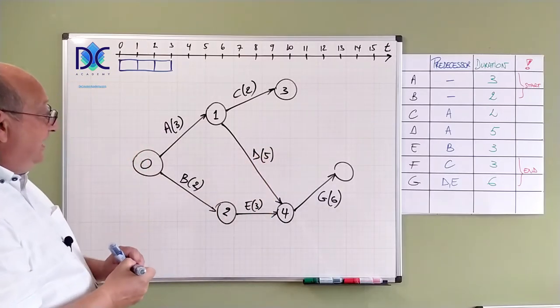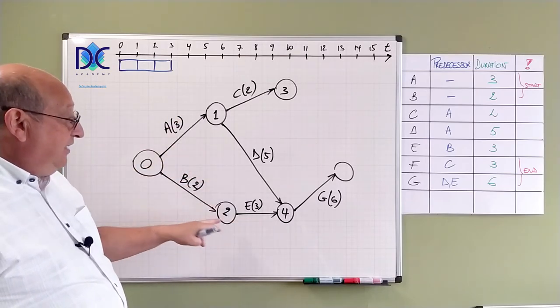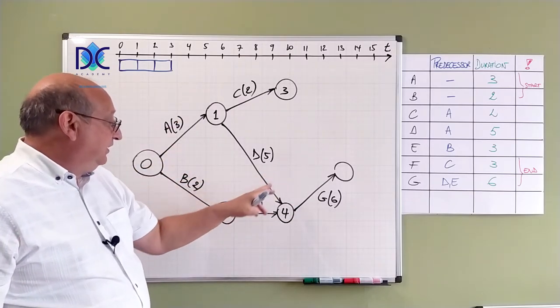And now I see in the graph we have A. D is after A. E is after B. And G is after D and E.